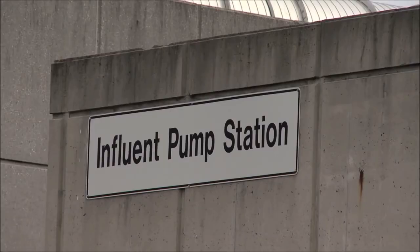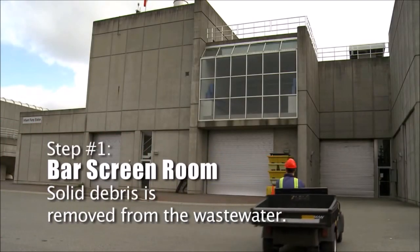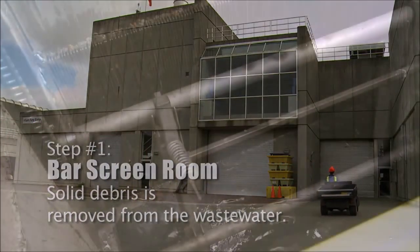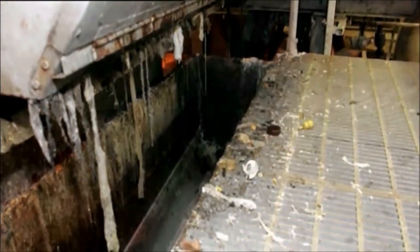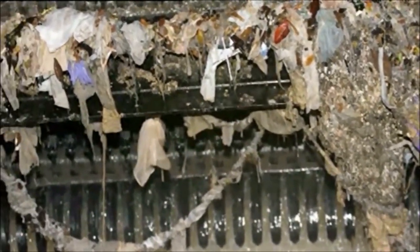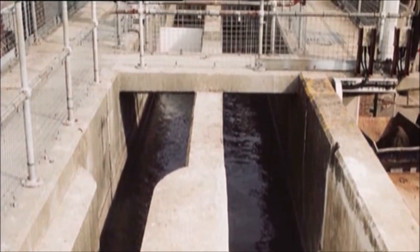The first stage of treatment takes place in the influent pumping station, where solid debris is removed from the wastewater. The incoming sewage passes through screens, where any rags or large debris is removed. Sewage flows through these channels, where road grit and sand is removed.